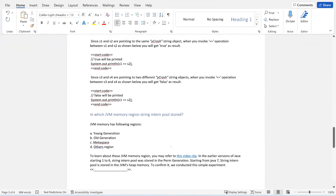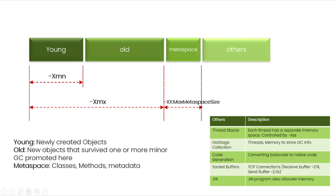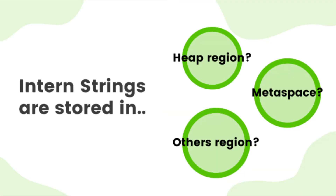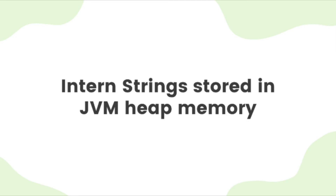Now the next question: the JVM has different regions — young generation, old generation, meta space, and the others region. Where is this intern pool stored? Whether it's going to be stored in the JVM heap, or in the meta space, or in the others region? Based on this diagram, it is going to be stored in the JVM heap memory only — it's not going to be stored in the meta space or the others region.